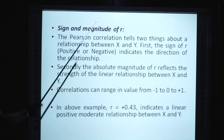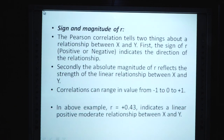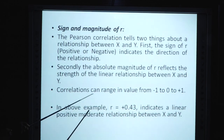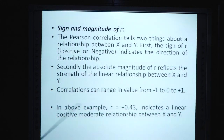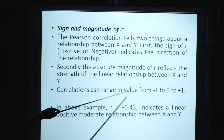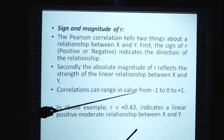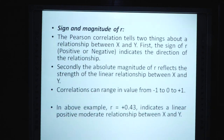Sign and magnitude of r: हमारा answer plus में आया। Correlations range in value from −1 to 0 to +1. r की value minus 1 से plus 1 के बीच में vary करती है। हमारे example में r = +0.43 आई, जो इस range के अंदर है — यानि calculation सही है। The Pearson correlation tells two things: first, the sign of r (positive or negative) indicates the direction of the relationship — दोनों variables same direction में change कर रहे हैं.